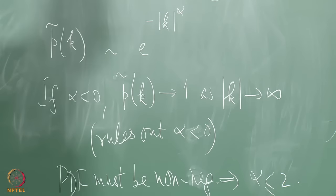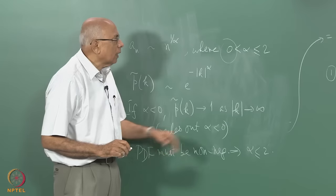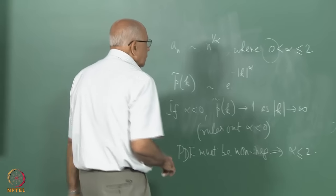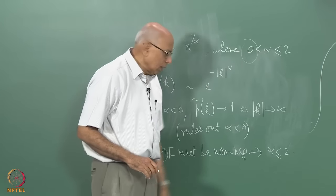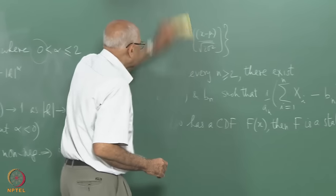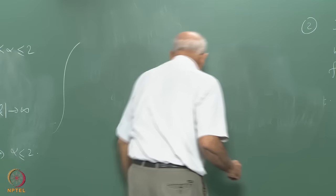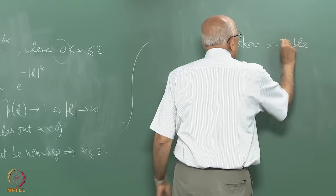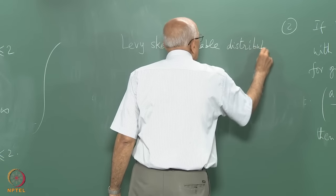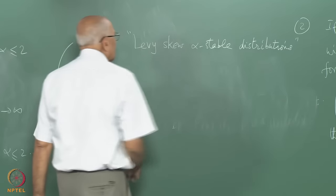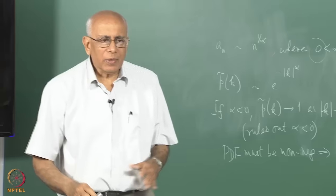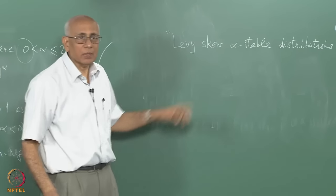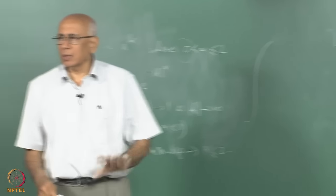So the stable distributions are characterized by this stability index alpha. The formal name for these distributions is Lévy-skew-alpha-stable distributions, though we will just call them stable distributions. There is some terminological confusion because one specific member of this family is called the Lévy distribution, but that refers to a particular case, not the general family.